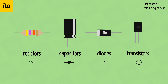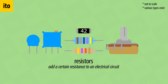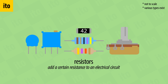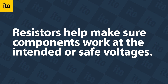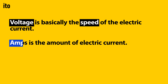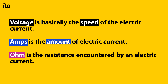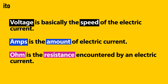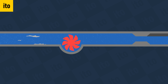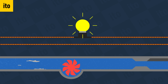Resistors, as their name implies, are electrical components that add a certain resistance to an electrical circuit. Amongst other uses, resistors help make sure components work at the intended or safe voltages. To sum up: voltage is basically the speed of the electric current; amps is the amount of electric current, the intensity if you will; and ohm is the resistance encountered by an electric current flowing through an electric circuit. Just as water flowing through a pipe can encounter resistance due to friction and other restrictions, so can electricity as it flows through an electric circuit.